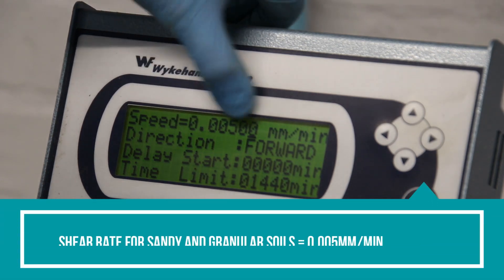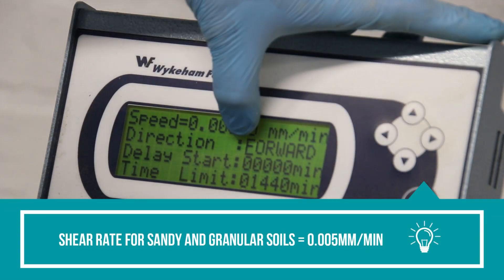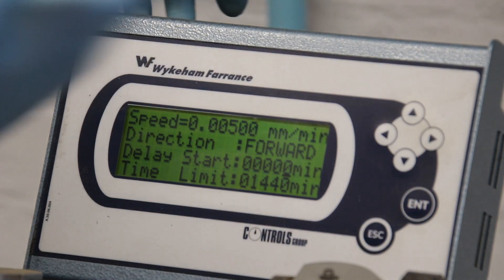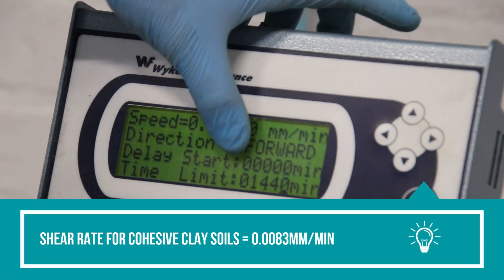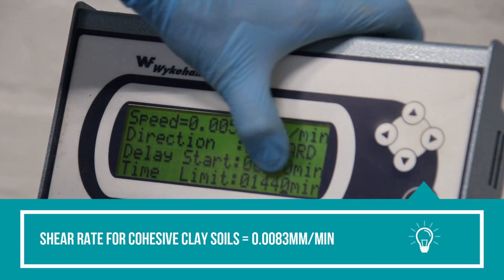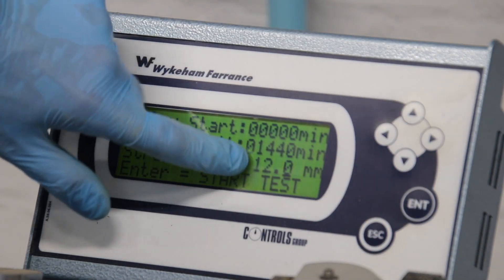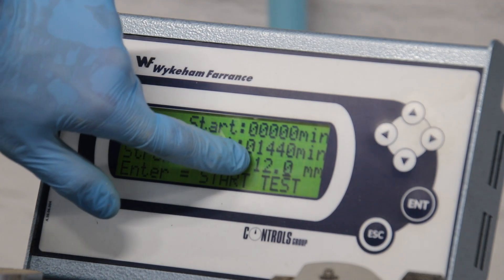Step 6: Different shear rates. Sandy and granular soils are tested at a slower rate of 0.005 mm per minute. Cohesive clay soils are tested at a faster rate of 0.0083 mm per minute. Set the device to the correct shear rate. Set the stroke limit to 12 mm.